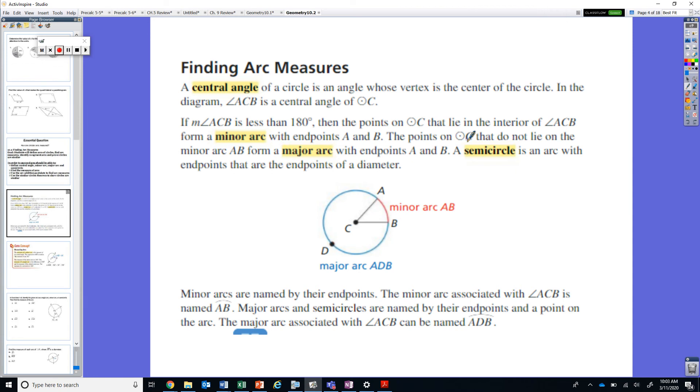Now the points on circle C that do not lie on the minor arc, everything else that is left, is going to be called the major arc. Now these are going to have an angle measure of larger than 180 degrees because the central angle right here is going to be greater than 180 degrees.